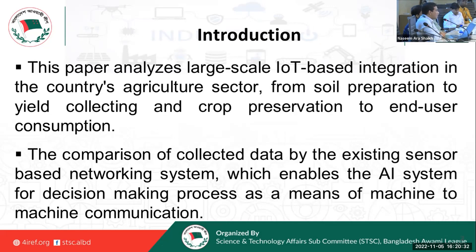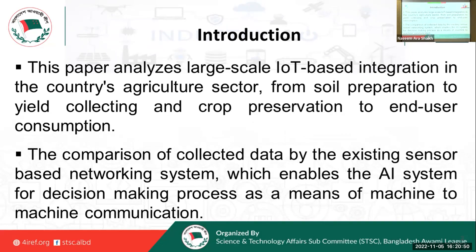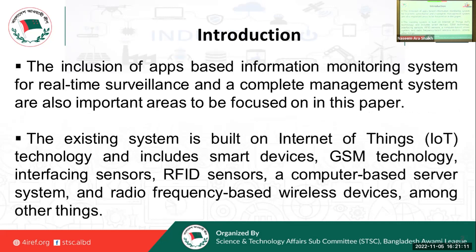This paper analyzes the large scale of IoT-based integration in the country's agriculture sector from soil preparation to yield collecting and crop preservation to end consumption — that is the whole process of the agricultural system. We would analyze the IoT-based integration, and it also presents a comparison of collected data by the existing sensor-based networking system, which enables the AI system for decision-making as a means of machine-to-machine communication. The inclusion of an app-based information monitoring system for real-time surveillance and a complete management system are also important areas focused on in this paper.